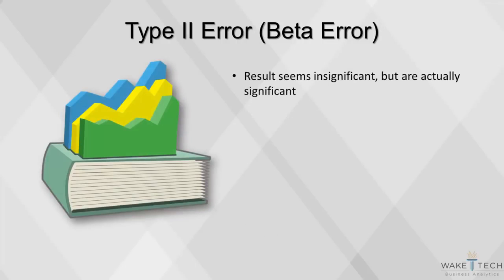Type 2 errors are like a false negative on a drug test. They occur when the alternative hypothesis is true, but there's not enough evidence in the sample to reject the null hypothesis. This type of error is traditionally considered less important than a type 1 error, but it can lead to serious consequences in real situations.